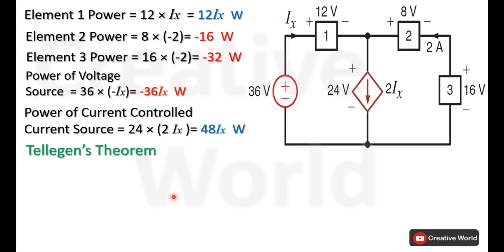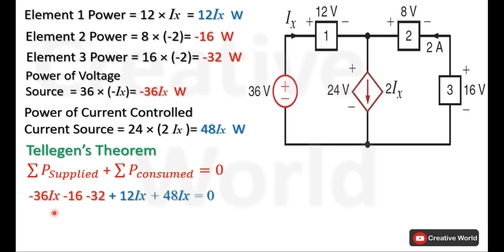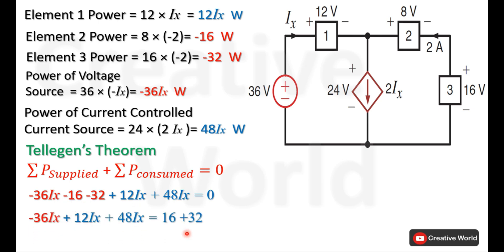Now we will use Tellegen's theorem. According to Tellegen's theorem, if we sum all supplied power and all consumed power in a network, the result will be zero. We have the details of supplied and consumed powers of this network, so we place all the supplied and consumed powers into this equation to find the value of Ix. Rearranging the equation and separating variables from constants, we solve to find the value of Ix, which is 2 A.